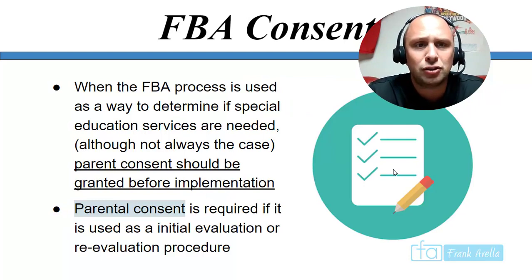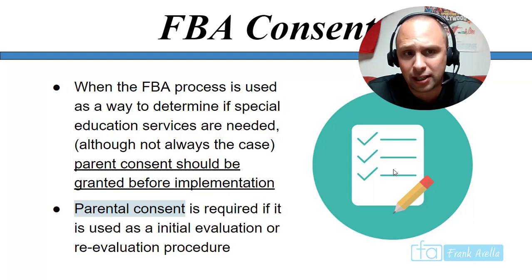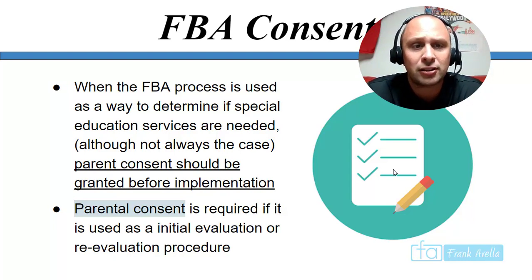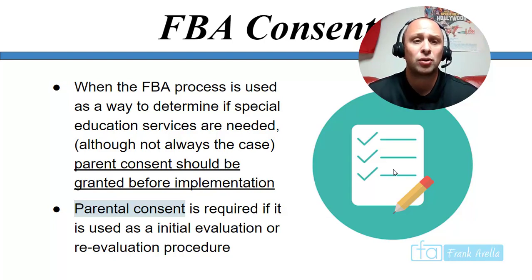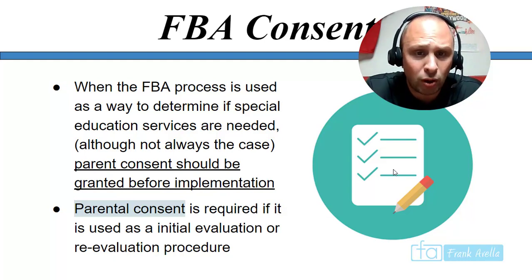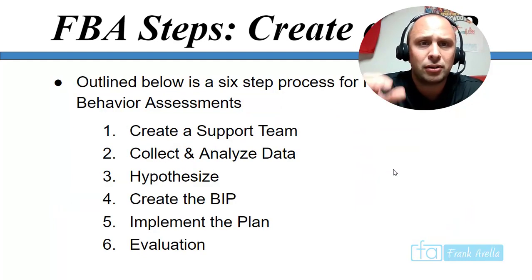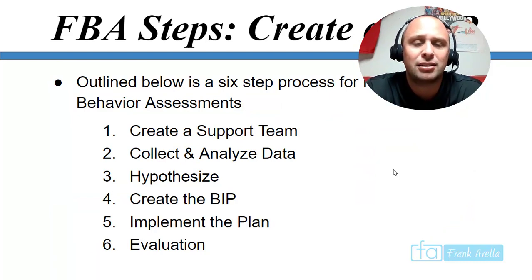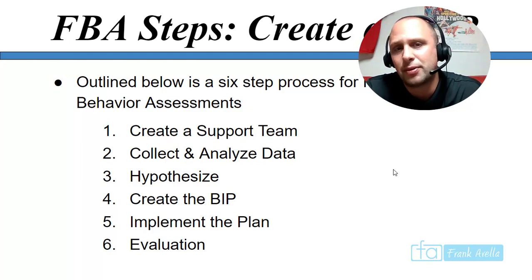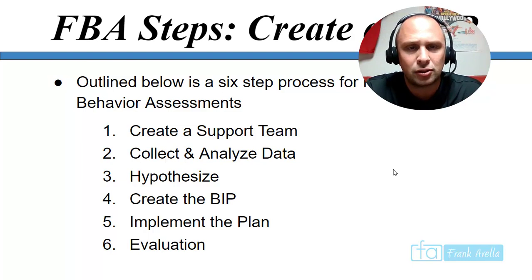The FBA process is used as a way to determine if special education services are needed, although not always the case. Parent consent should be granted before implementation, and it's required if the FBA is used as an initial evaluation or re-evaluation. Now, here is a six-step process to an FBA — though you may see four-step, eight-step, or twelve-step versions depending on the source.